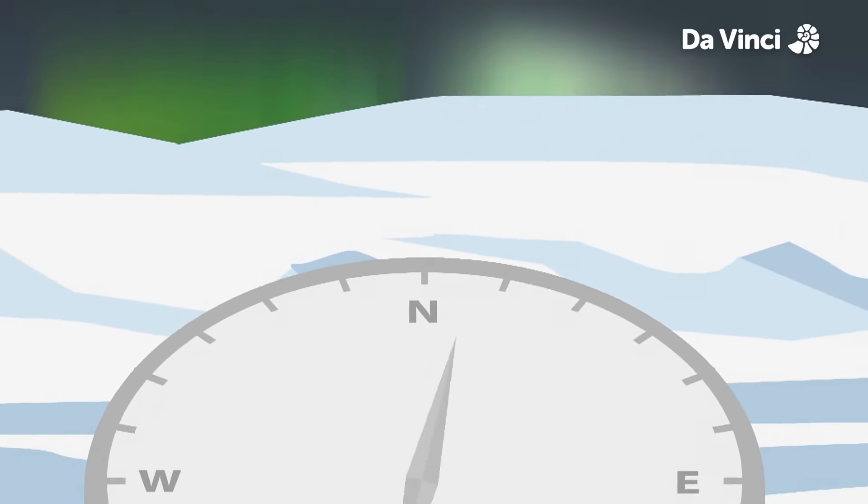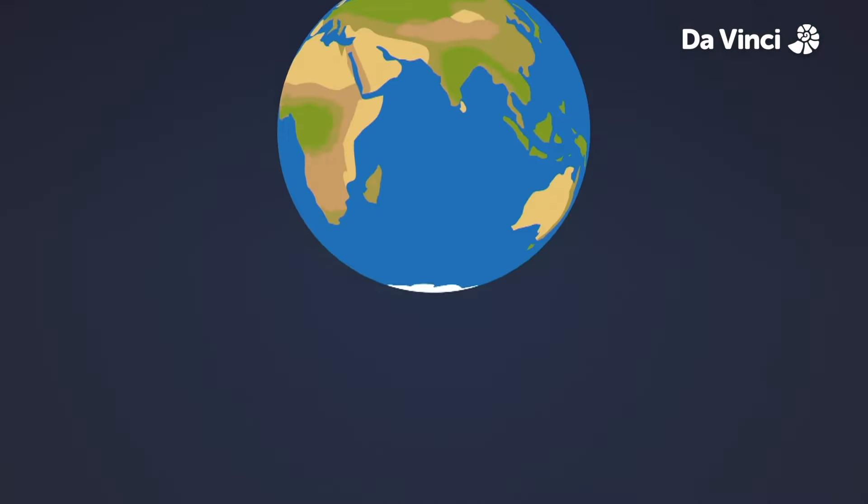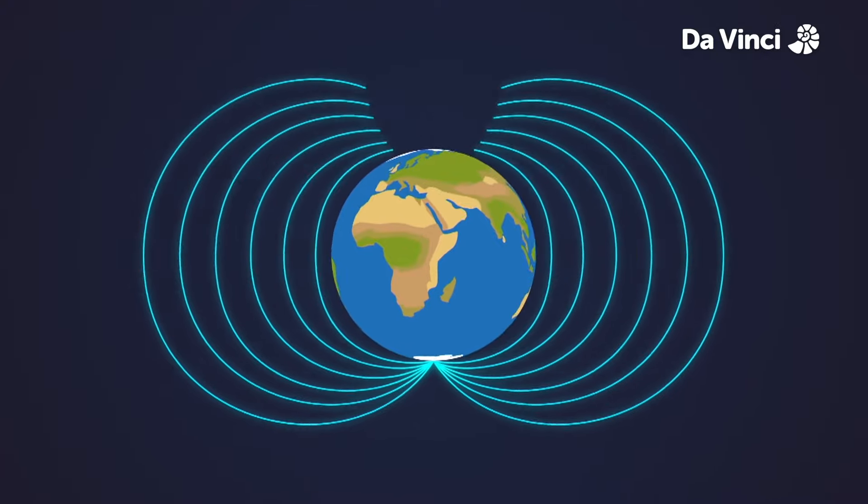A compass needle that points to the north and the mysterious polar lights both have the same cause: the Earth's magnetic field.